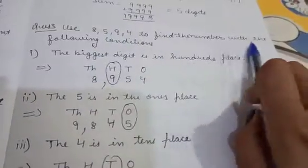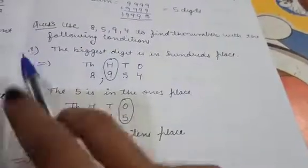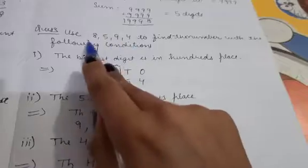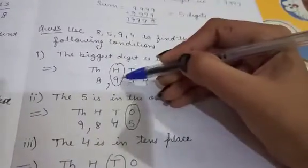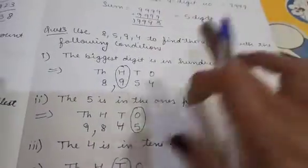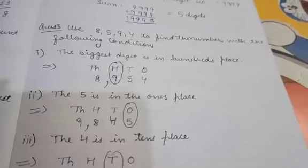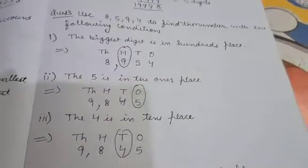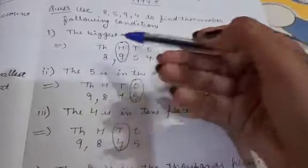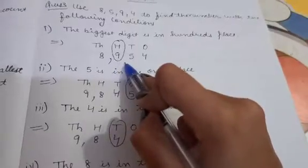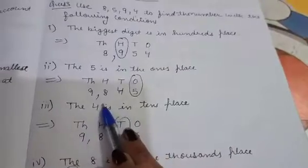Question number three: we are given the digits 8, 5, 9, and 4. We have to form numbers for the following conditions. First condition: the biggest digit is in the hundreds place. The biggest digit from the given set is 9, so we place 9 at the hundreds place. The rest of the digits can be placed in any order. One example is 8954. You can form other numbers too, but 9 must stay at the hundreds place.